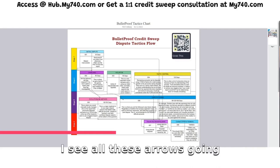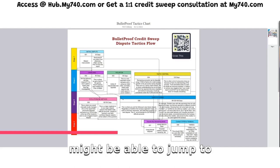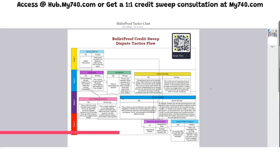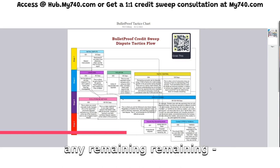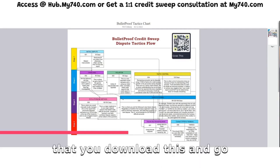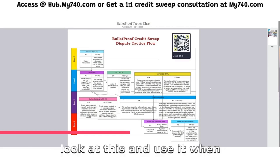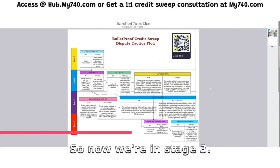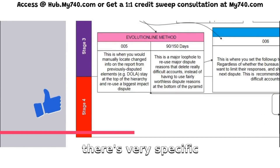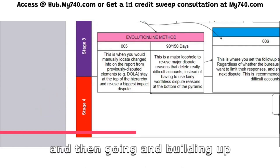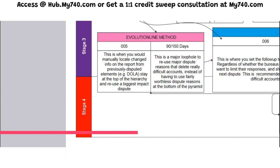Looking at this chart, you'll see arrows going everywhere — that's because you might be able to jump to different tactics and different rounds depending on whether something was removed or how it was updated by the bureaus, creditor, or collector on your credit report. So if we're starting at our initial dispute and we go to Gameland, and the account was removed but something else was not, we can jump down to the Evolution Line Method, or we can go to the dispute funnel.